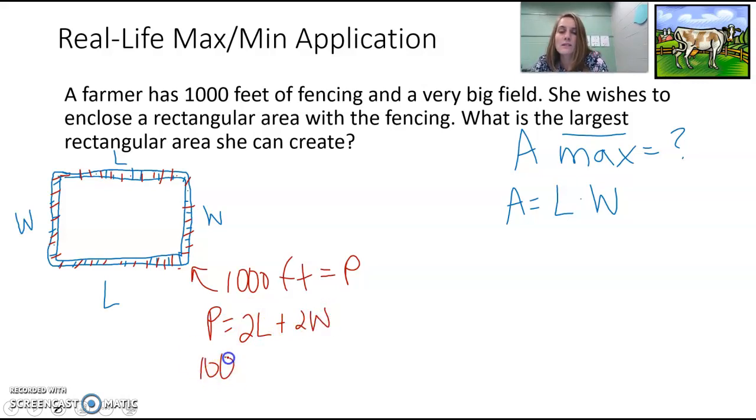So 1,000 is equal to two lengths plus two widths. And so if we can do some substitution here, think back to what we've learned before, we can change our area formula so that it's no longer three variables. So it doesn't matter necessarily which variable you choose because we're really only caring about the area. We don't care about what the length and the width are exactly. So I'm going to solve for length.